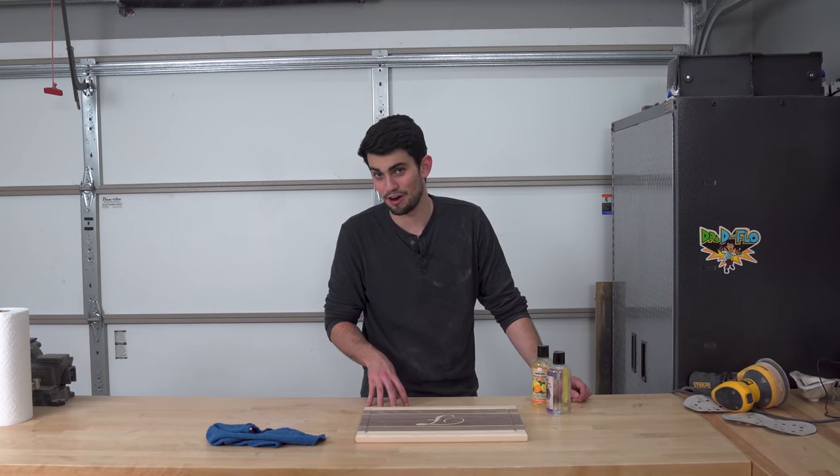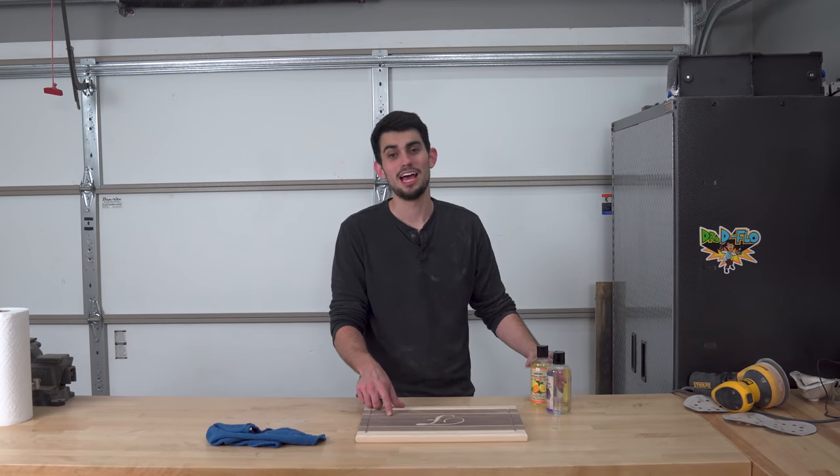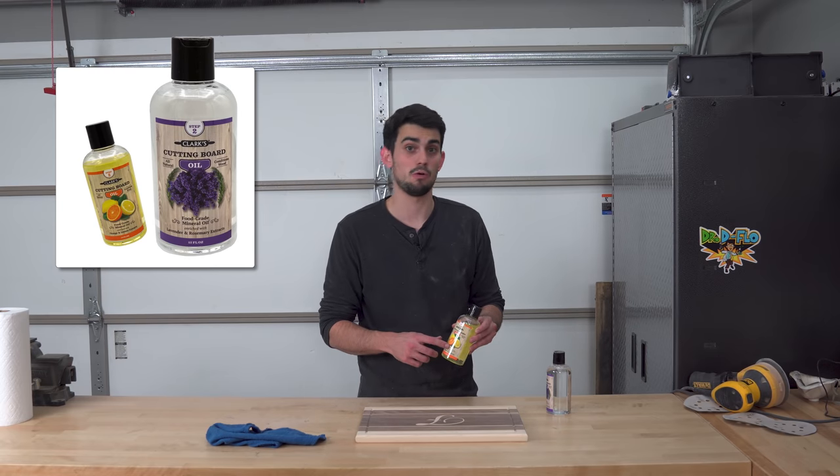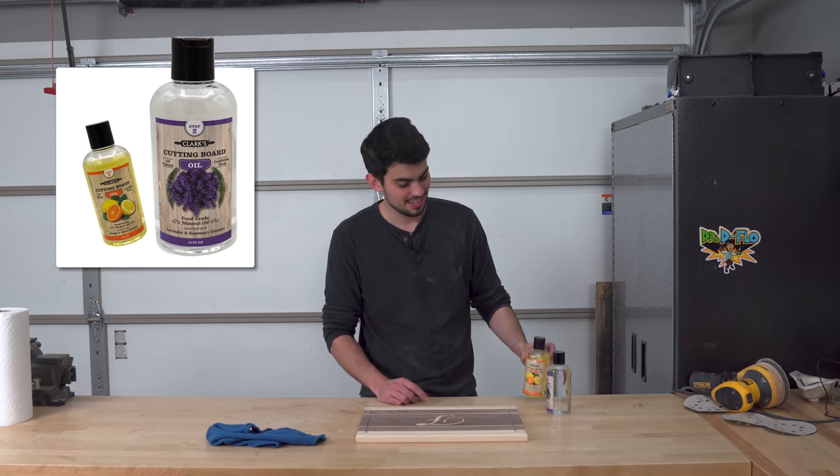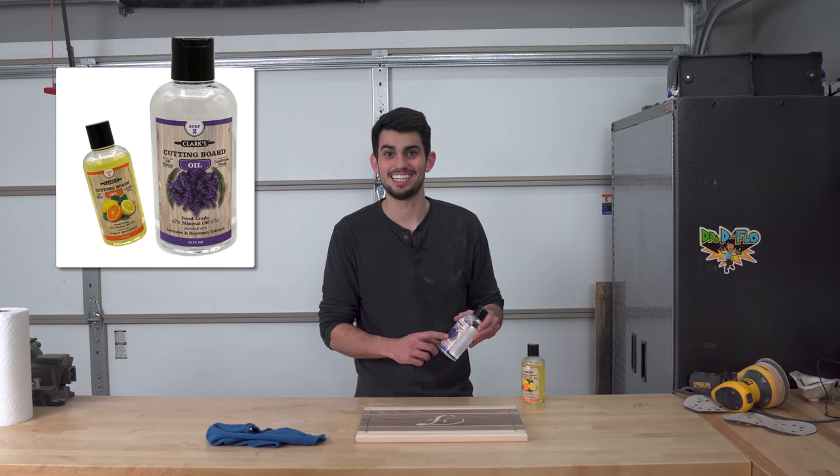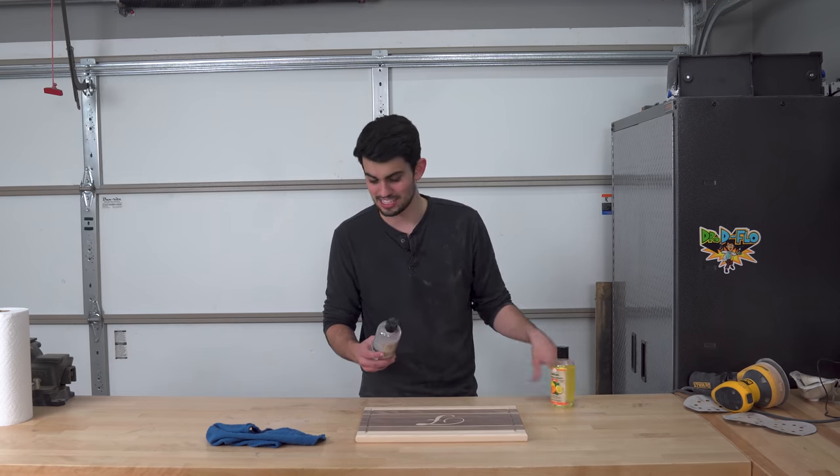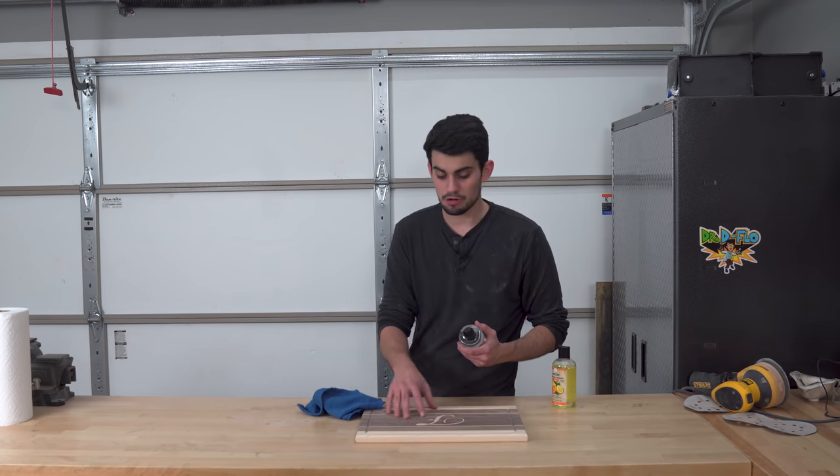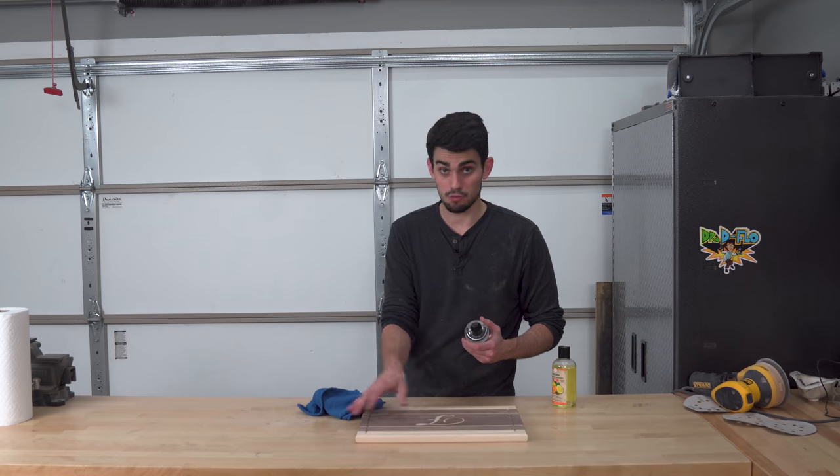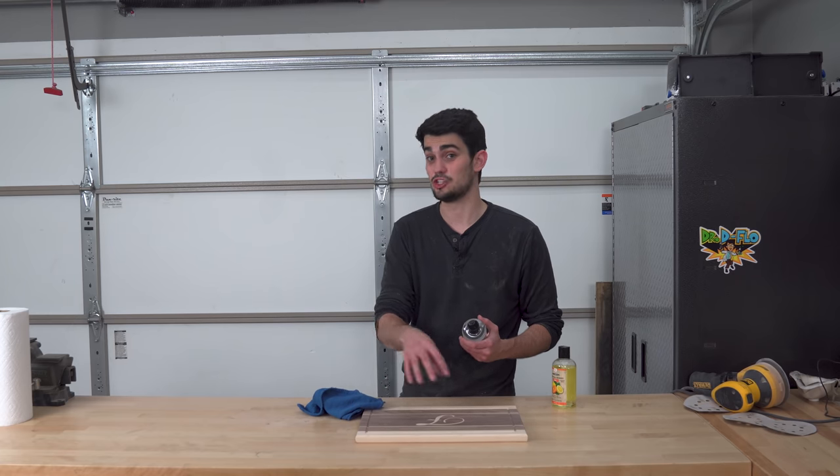Now we get to my favorite part, oiling the cutting board. I like to use Clark's food grade oil. I can't decide which I like more, the citrus or the lavender scent. I think I'm going to go with the lavender this time around. But basically, you apply as much oil as the board will absorb. You wipe it off and you come back and you do that again 24 hours later.